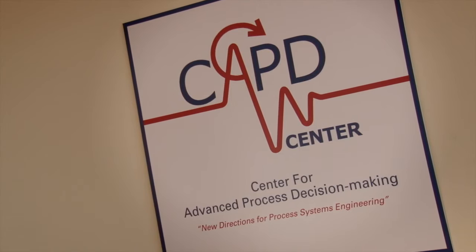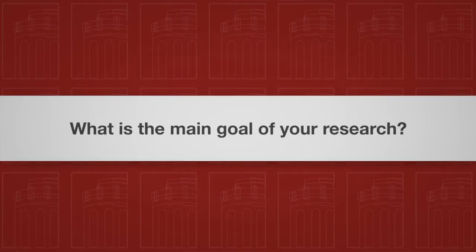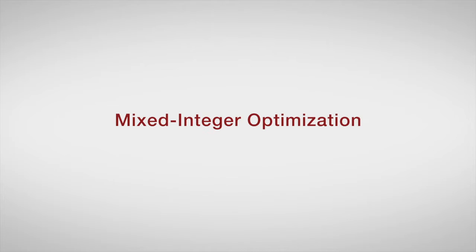I'm Ignacio Grossman, a professor of chemical engineering here at Carnegie Mellon University. I'm also the director of the Center for Advanced Process Decision Making. The major goal of my research is to develop optimization models and methods in order to address a variety of problems in process systems engineering, and specifically what is called mixed-integer optimization.